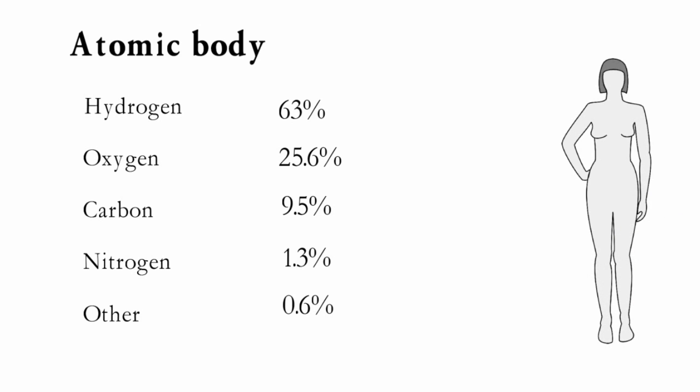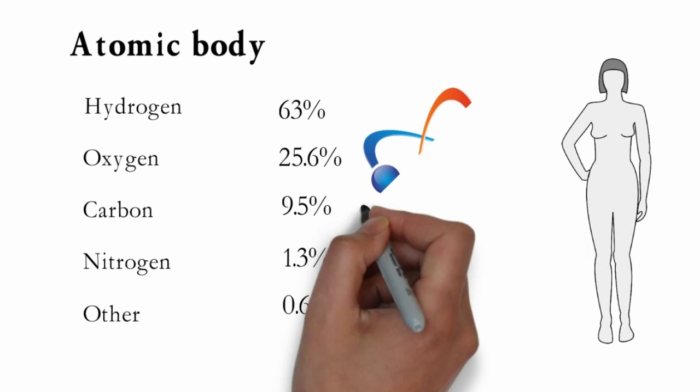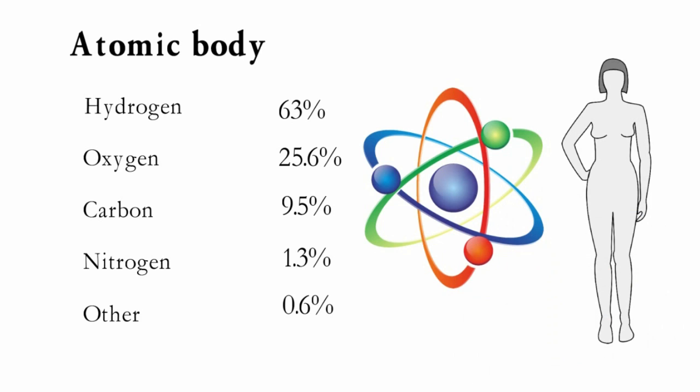Interestingly, universe also comprises mostly of top 4 elements found in human body, as these are most abundant in the universe, excluding helium which comes at second place by atomic count but is chemically inert.